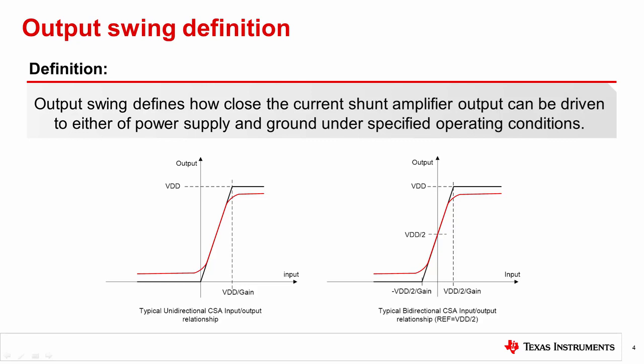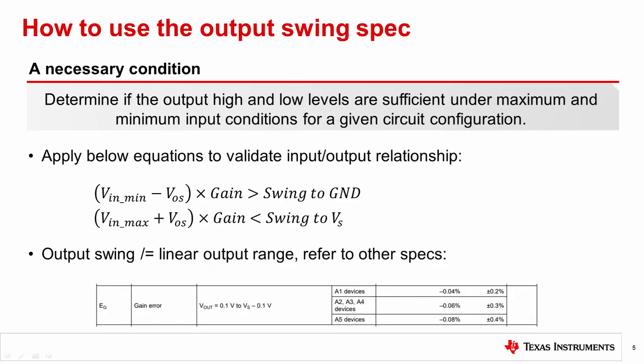An actual CSA output typically has an output that is slightly below VS and slightly above ground. In between is a linear section with curved edges, as the red line shows. It is exaggerated in order to show the swing limits.